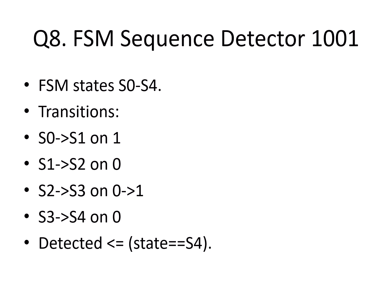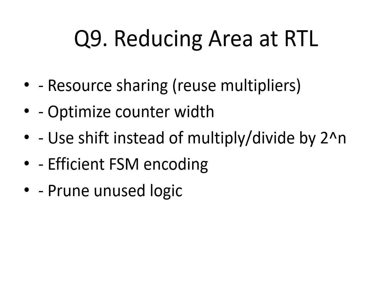FSM coding problems are a Qualcomm favorite. For a 1001 sequence detector, explain the states step by step, then show code — they are checking if you think in terms of a state diagram before writing Verilog. If synthesis shows high area utilization, talk about resource sharing, smaller counters, and using shift operations instead of multipliers. This proves you know RTL-level optimization.